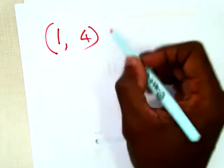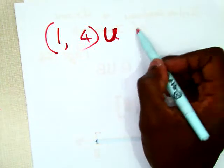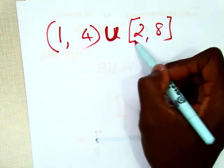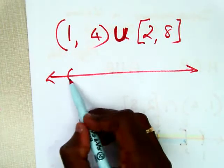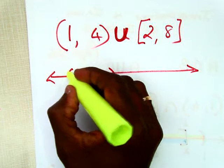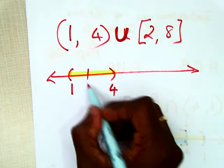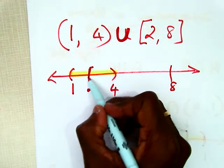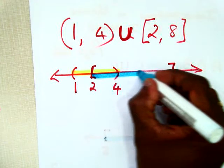Here's another example. If I give you (1, 4) union [2, 8], let's draw the graph. We have starting at 1 all the way up to 4 — 1 and 4 are not included, so the solution set is between 1 and 4. And then for [2, 8], I go from 2 up to 8 using square brackets, so the solution set for that is between 2 and 8.